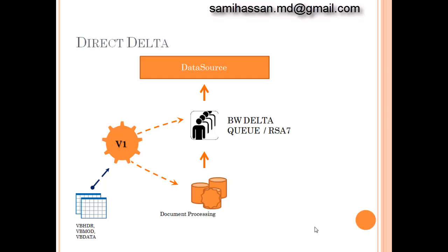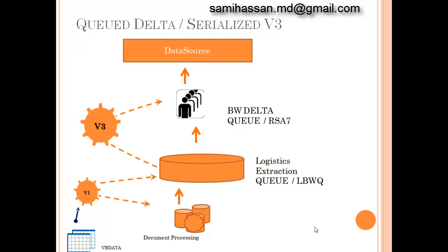The implications of using Direct Delta are that the ECC system will be burdened, but the delta will be faster and serialized, as V1 will write and commit every LUW (Logical Unit of Work) to both the application tables and BW Delta Queue at the same time. This method is generally advised only for situations where a small number of documents are posted in the system.